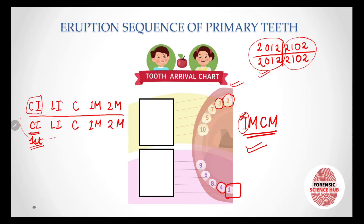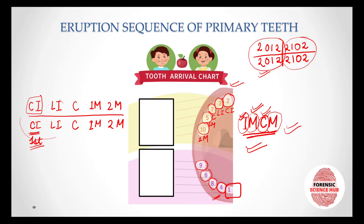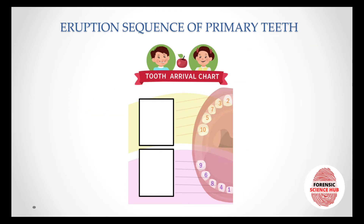Then in this formula we have M — that is the molar is going to erupt. Which molar? The first molar. After the eruption of the lateral incisors in the lower jaw, the next tooth is the upper first molar — that is number five, then six. Next tooth is going to be canine — seven and eight — and the last ones are going to be the second molars, lower jaw first — nine and ten. Remember this formula: I M C M.